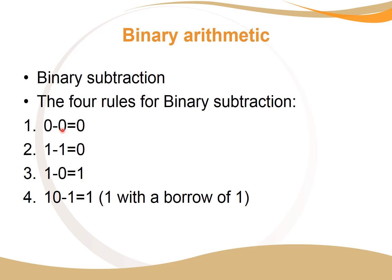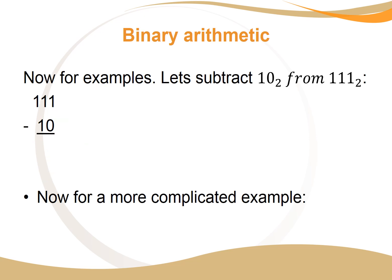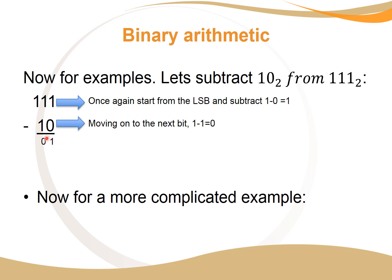Now for binary subtraction. The four rules are: zero minus zero is zero; one minus one is zero; one minus zero is one; and one zero minus one equals one with a borrow of one. Let's do an example: 111 minus 10 in binary. We subtract the least significant bits: one minus zero is one, then one minus one is zero, and bring the one down, giving 101.